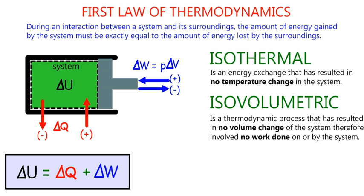An isovolumetric process is a thermodynamic process, or an energy exchange, that has resulted in no volume change of the system. And since there was no volume change, therefore there was no work done on the system, or therefore no work done by the system.